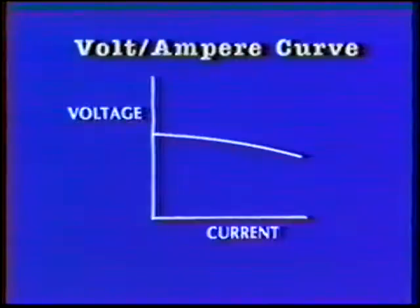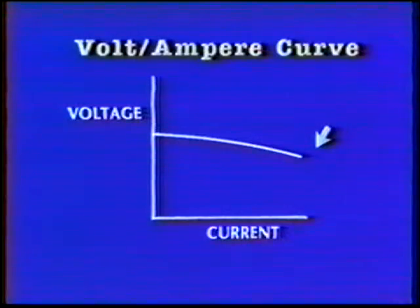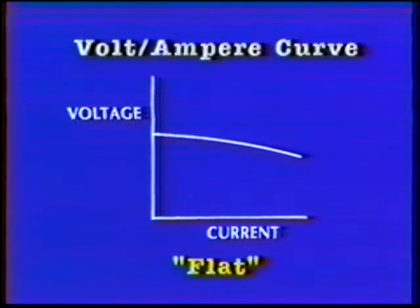Constant voltage power sources are made for direct current only. This power source maintains a nearly constant voltage regardless of the current in the arc. This is called a flat volt-ampere curve.